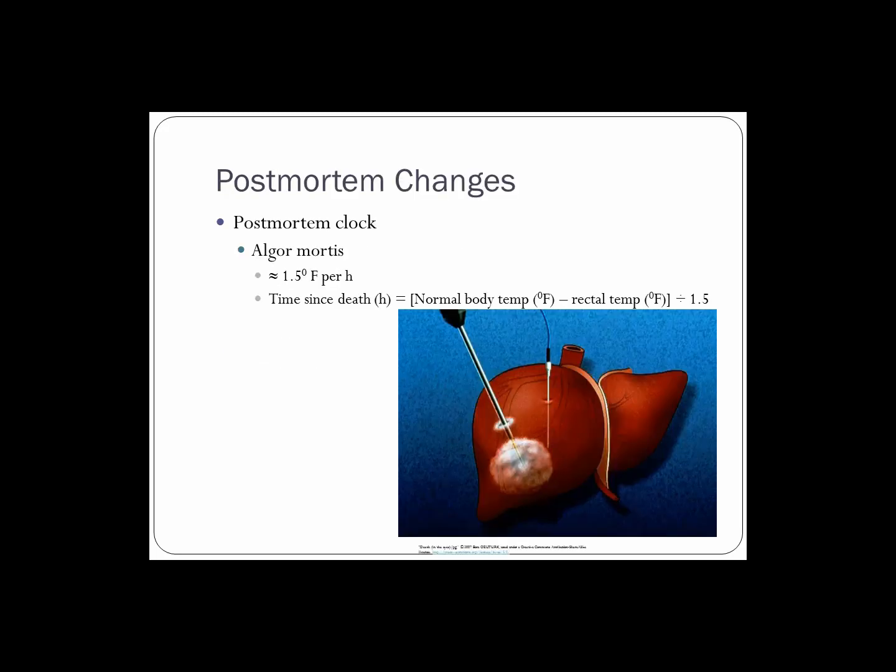Once an animal dies, the normal bodily functions cease and the body begins to break down. Circulation stops, the chemical composition of bodily fluids changes, digestion ends, the natural bacteria in the gut begins to take over, and other animals begin to feed on the body. Those decomposers and transformers come along to free up that energy. All of the homeostasis the body spent its entire life maintaining just ceases, and everything goes out of whack. These things happen in a particular order.